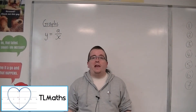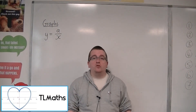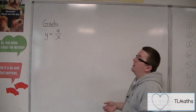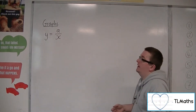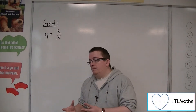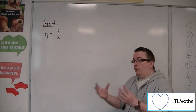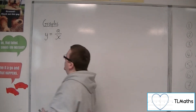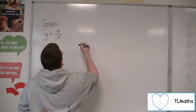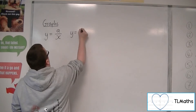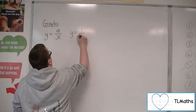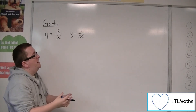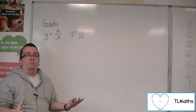We now want to investigate what reciprocal graphs look like — graphs of the form y equals a over x. The most useful one to start with is y equals 1 over x. If we consider y equals 1 over x, we want to start off by plotting a few points.